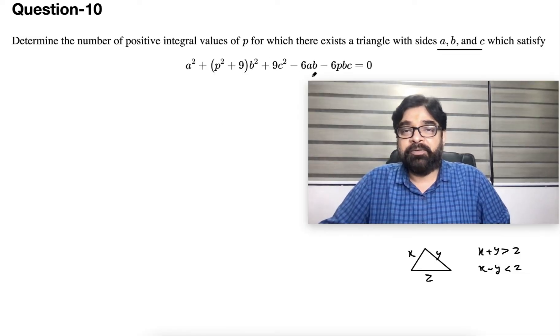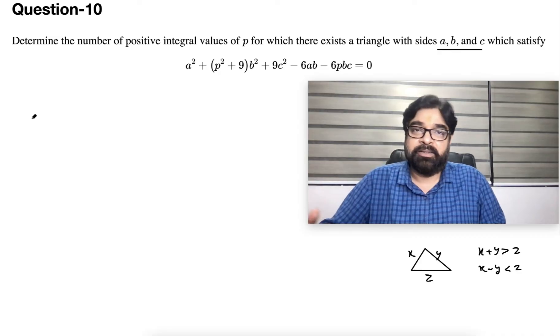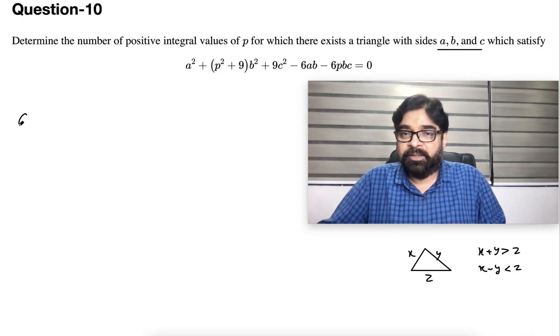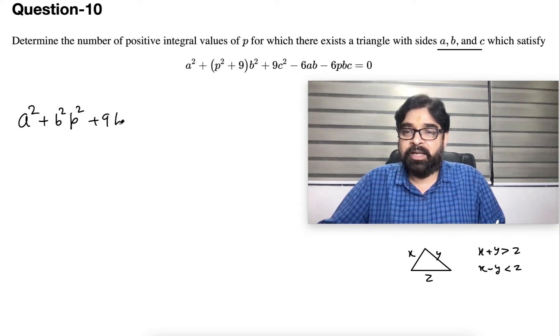First, let's make it crystal clear. This is a² + p²b² + 9b² + 9c² - 6ab - 6pbc = 0. First, try to convert and make pairs wherever they can be combined.